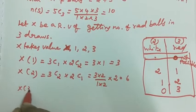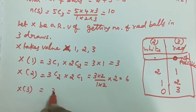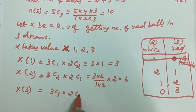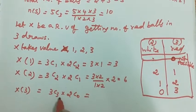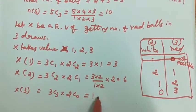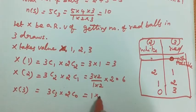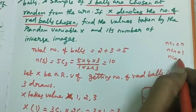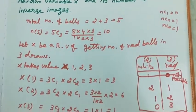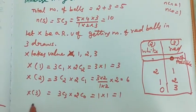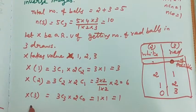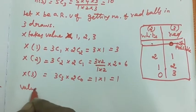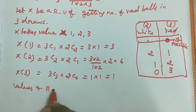Next step, for x=3: 3C3 into 2C0. 3C3 equals 1 (since nCn = 1), and 2C0 equals 1 (since nC0 = 1). So 1 into 1 equals 1.